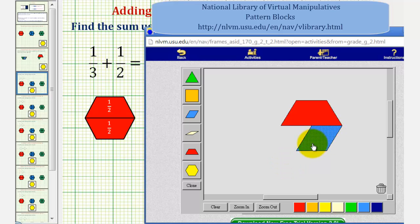We could exchange the blue pattern block for two green pattern blocks, where each is one-sixth.